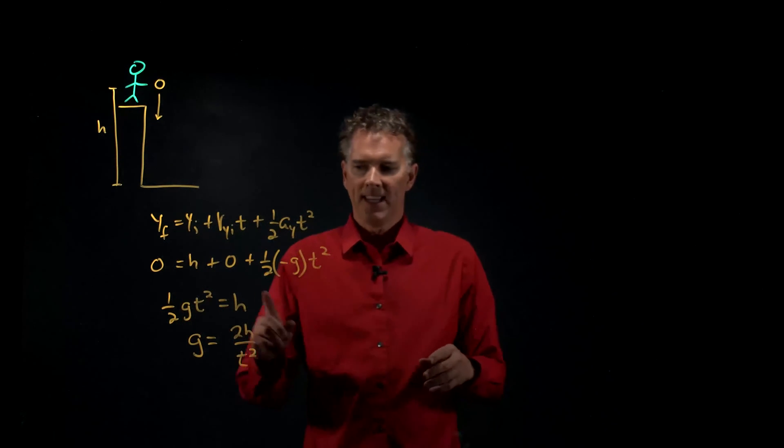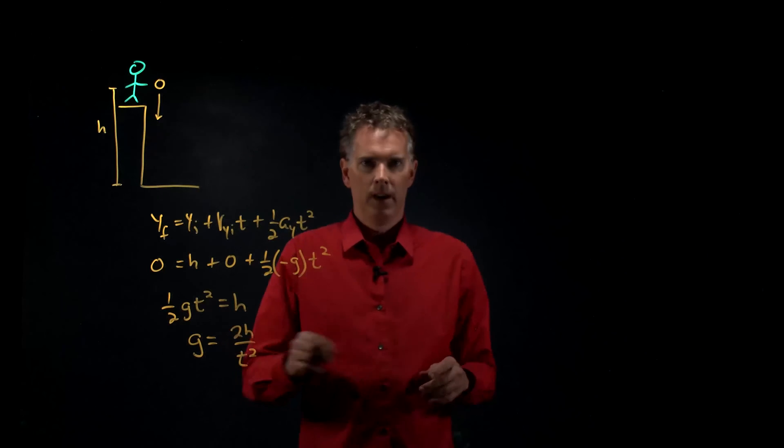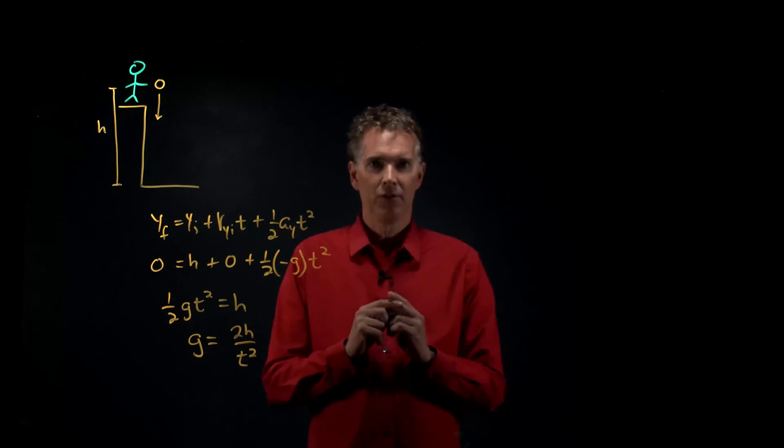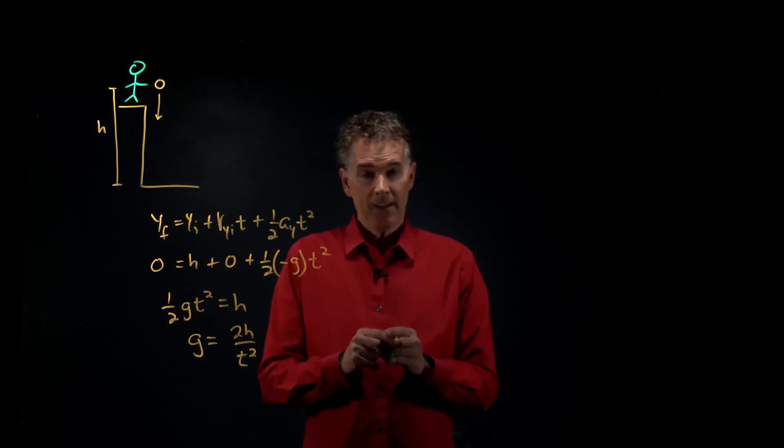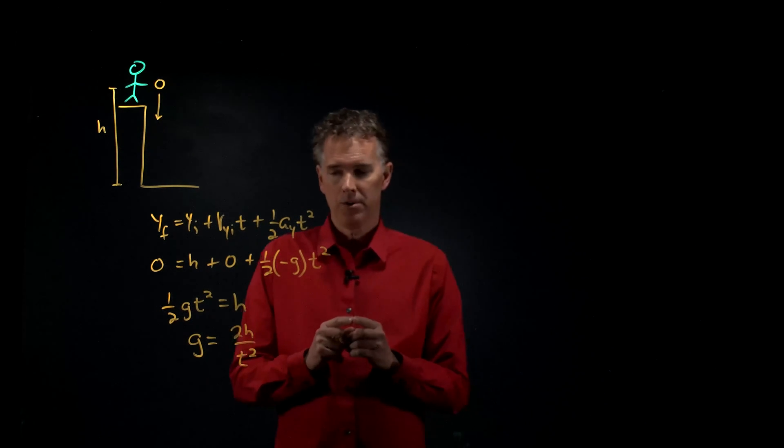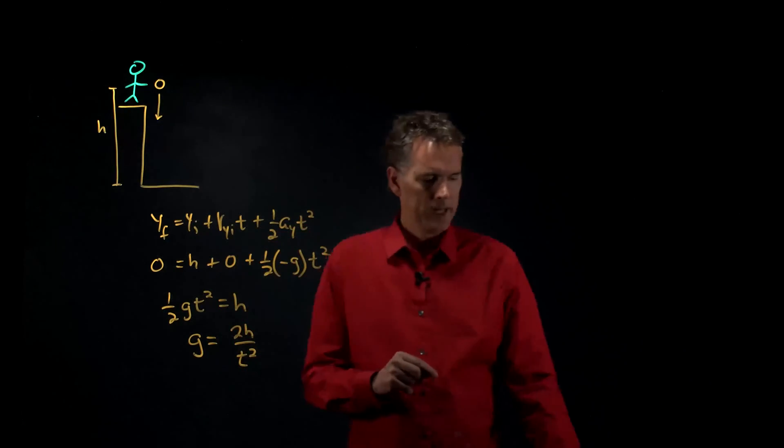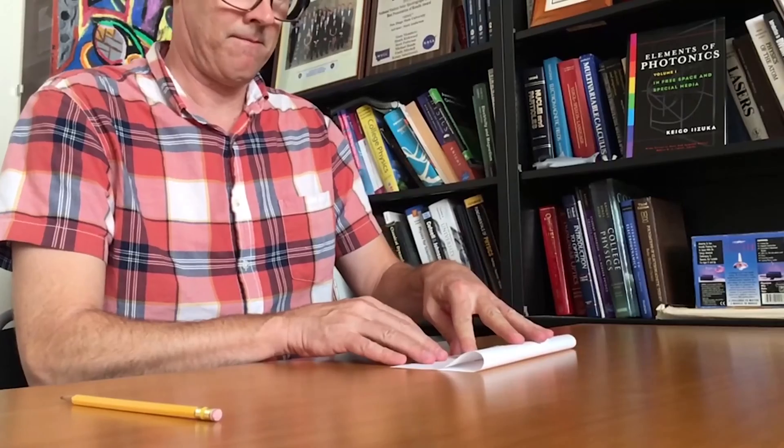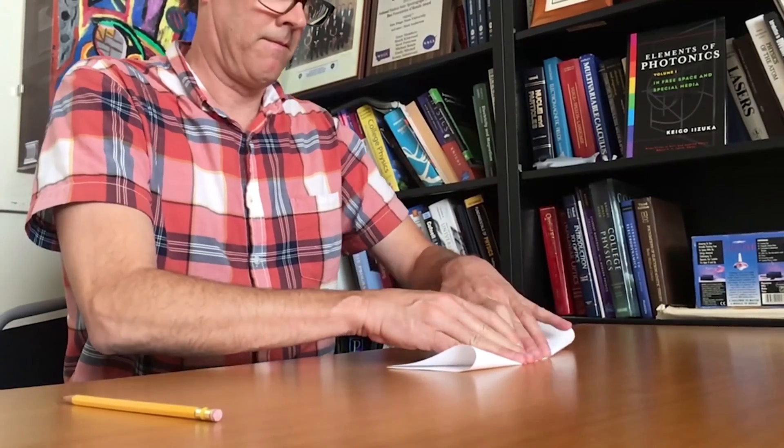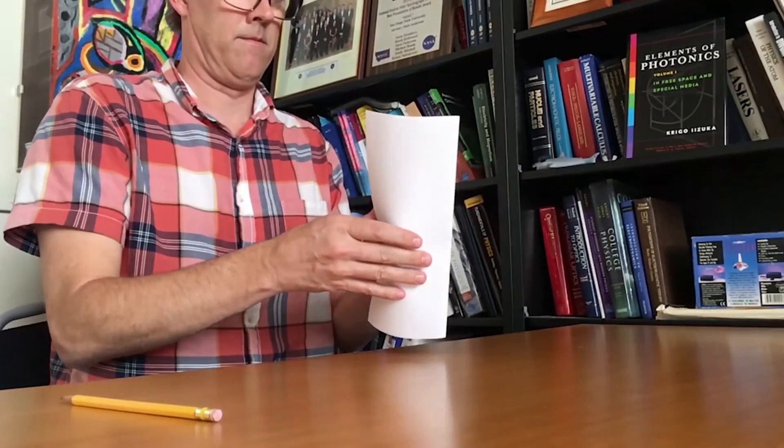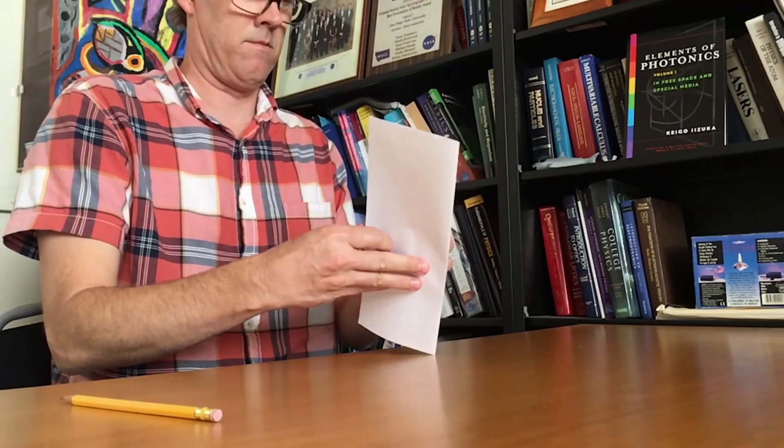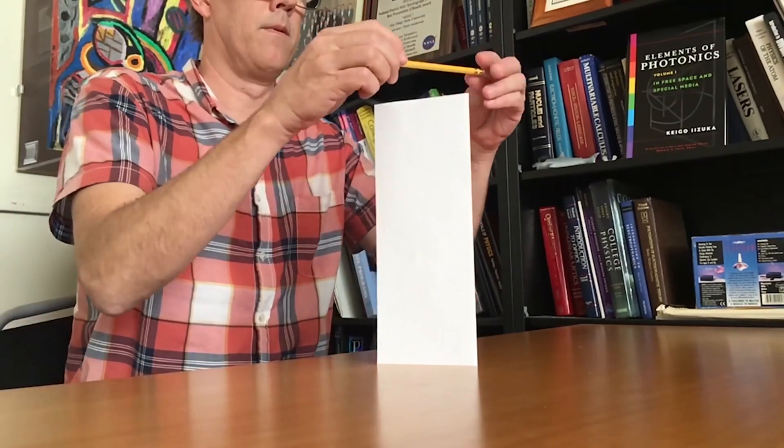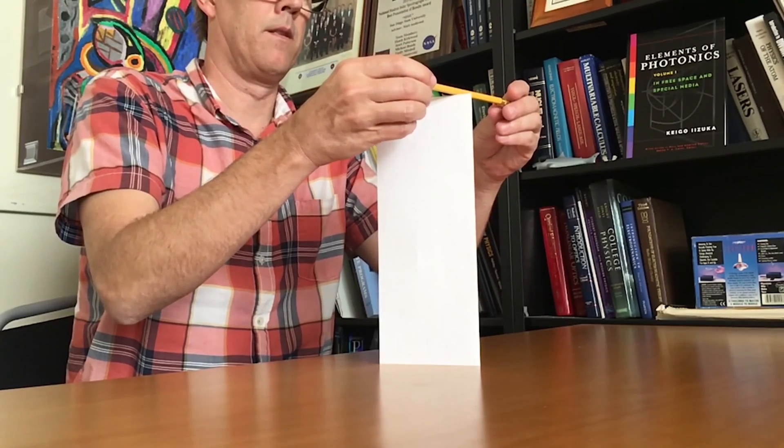Now here's a question. Can you measure g in your lab right now with a piece of paper, a pencil, and your smartphone? Yes, you can. The way we're going to do it is the following. We're going to take a piece of paper and we're going to fold it in half. And on top of that piece of paper you're going to put the pencil. Now a piece of paper is exactly eight and a half by eleven inches, so the height is eleven inches. Exactly.